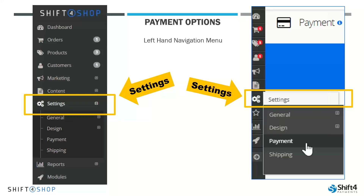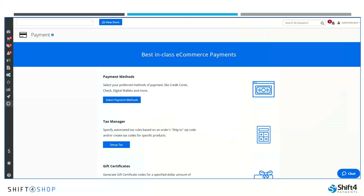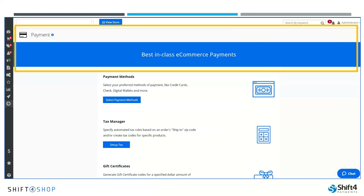For those options that have additional options within, like Settings, you can hover over the gear to populate the additional options off to your right when that left-hand navigation menu is in the minimized form. So we'll select Settings or the Gears. From there, we'll select Payment, which takes us to our Payment page, where we find our best-in-class e-commerce payments.